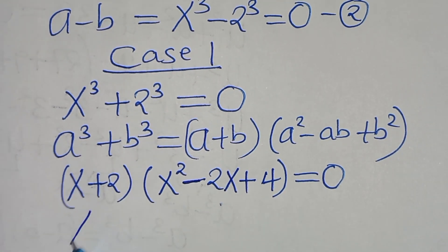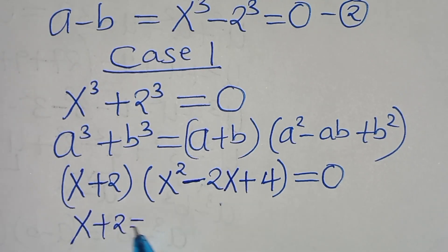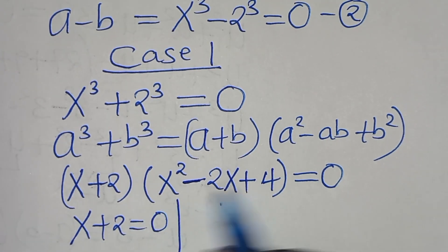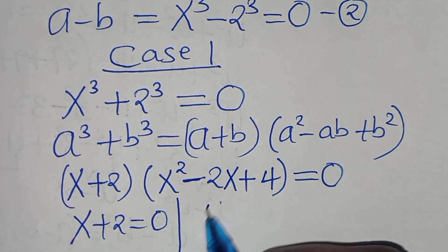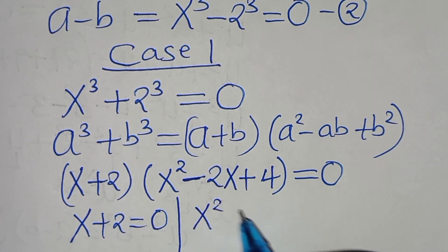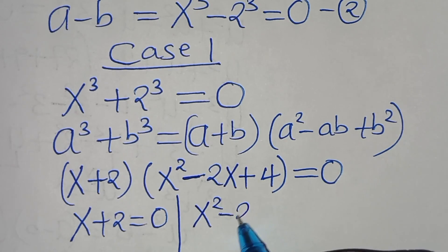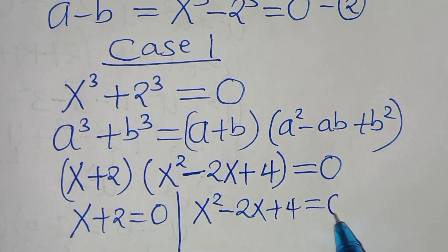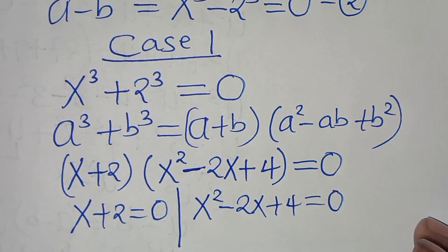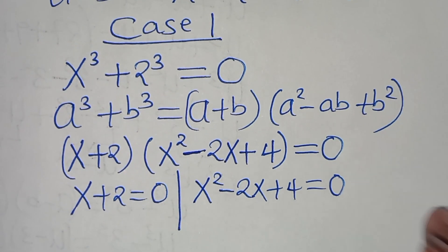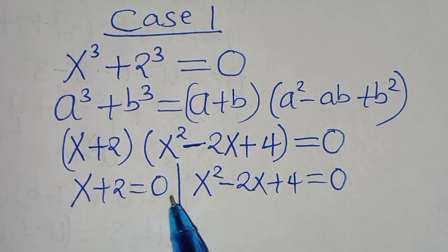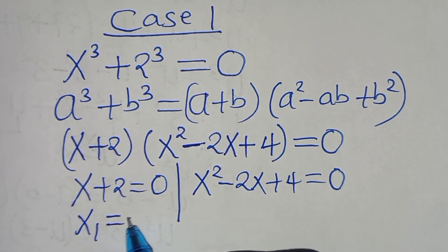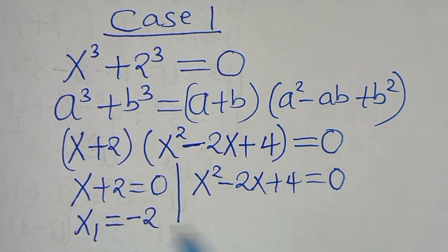So here we have two parts. The first part is x plus 2 equals 0, and the second part is x squared minus 2x plus 4 equals 0. From the first part, we get x₁ equals minus 2.